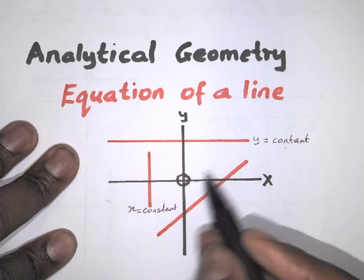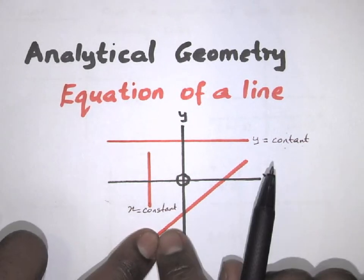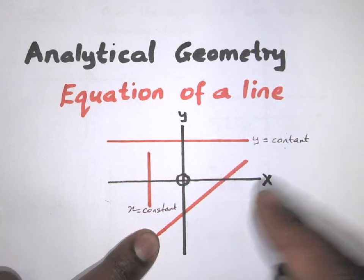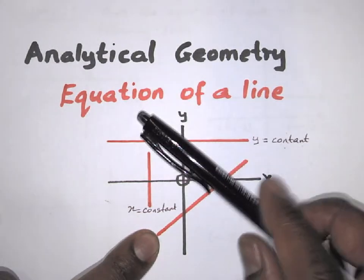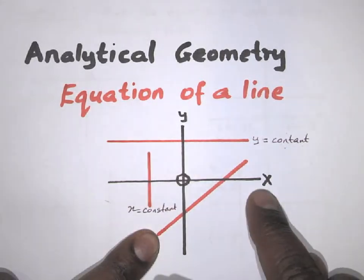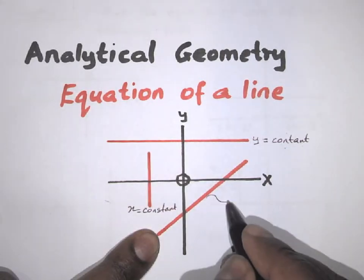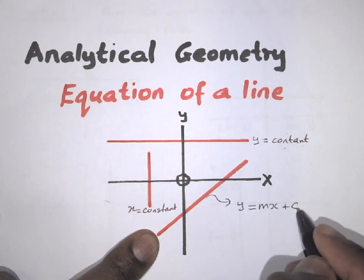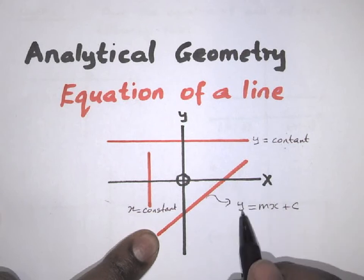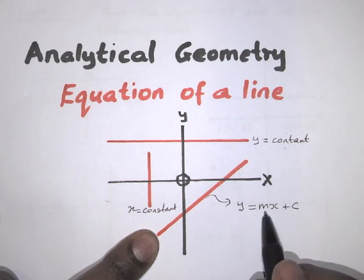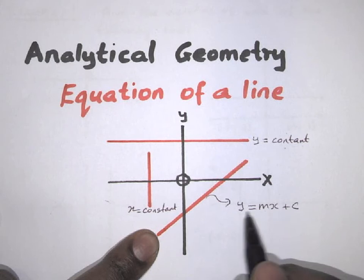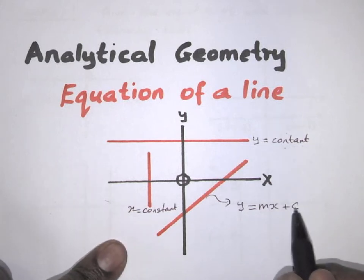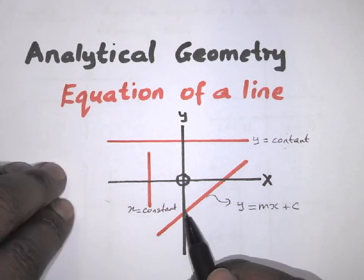However, if a line is slanted, cutting both the y-axis and the x-axis — it could also face that direction, cutting the x-axis and the y-axis — the format of a line like that would be y is equal to mx plus c. Your equation is slanted if you have y equals mx plus c. The m is the gradient and c is the y-intercept; c is where the line cuts the y-axis.